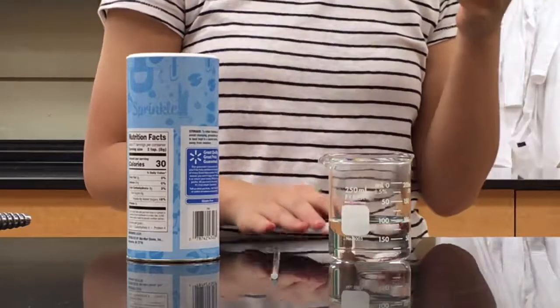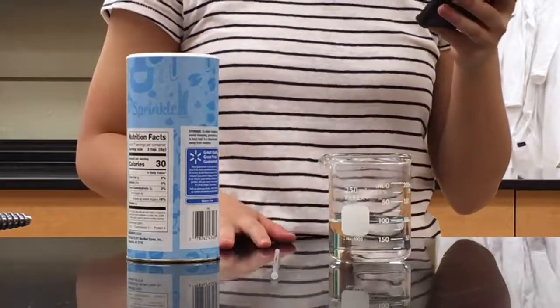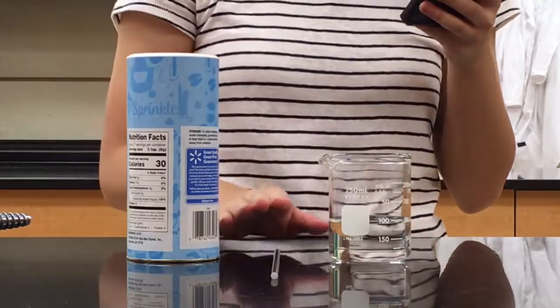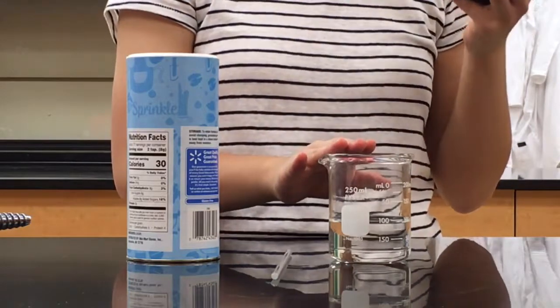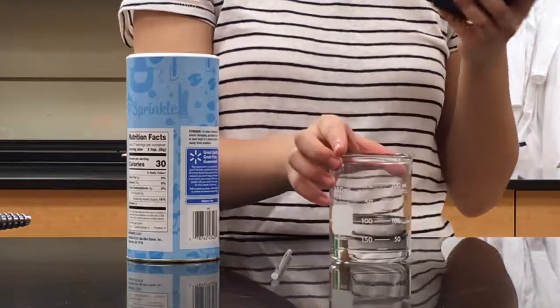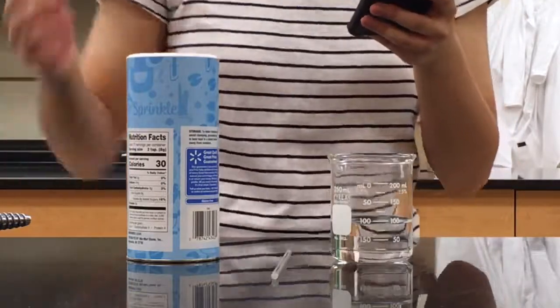So today we're going to be doing the particle nature of matter experiment. What you're going to need is some sugar, a glass stirring rod, a 250 milliliter beaker filled with 100 milliliters of water, and that's it.